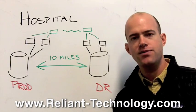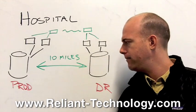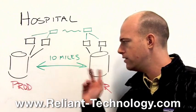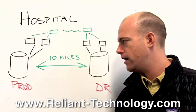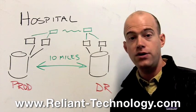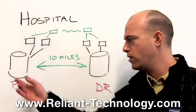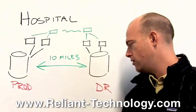They reached out to us at ReliantTechnology.com and we put together an option for a used EMC CX4 240 with about 40 terabytes at production and 40 terabytes at DR. That option alone saved them over $350,000.